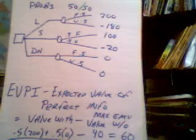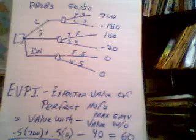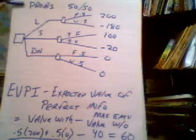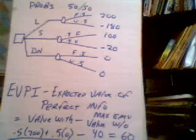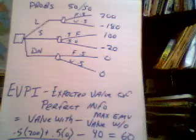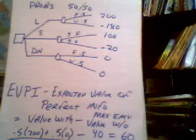Continuing with our lecture from the first part, I'd like to start with some probabilities on those states of nature. Let's say that the probabilities on the two states of nature, favorable and unfavorable, are 50-50. That's our best guess. So we're going to calculate the expected value for each alternative.